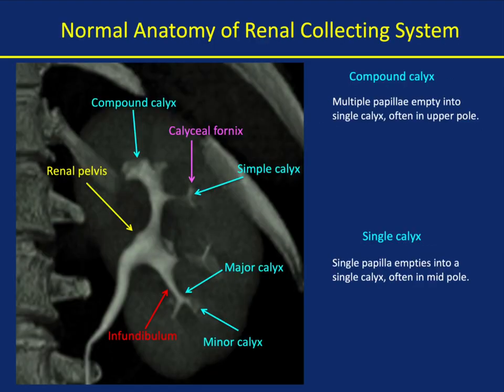If you look at a normal collecting system, you can see the infundibulum, the renal pelvis, a simple calyx, and a compound calyx. A single calyx is when a single papilla empties into a single calyx, often in the mid-pole. With a compound calyx, multiple papilla empty into a single calyx, often in the upper pole, which you can see very nicely here.